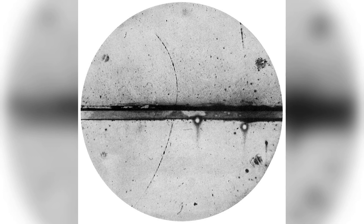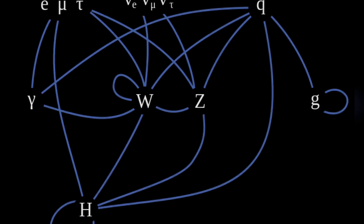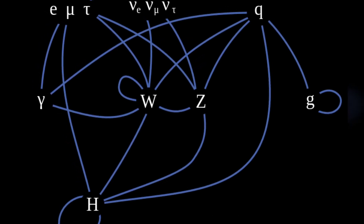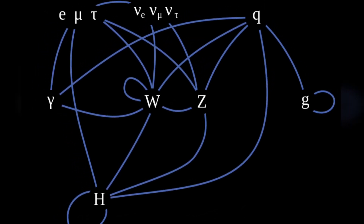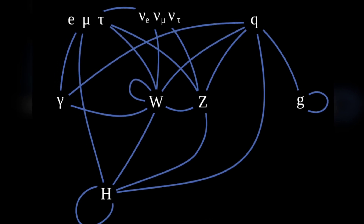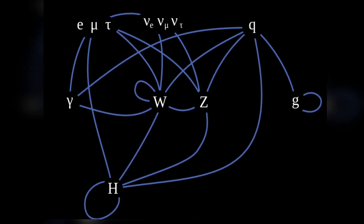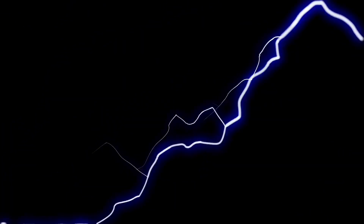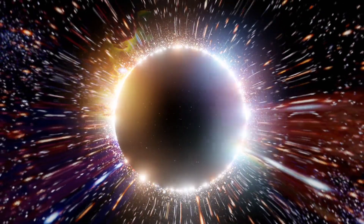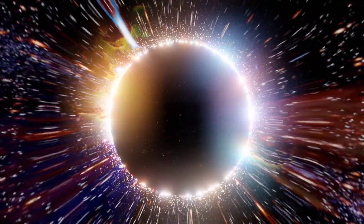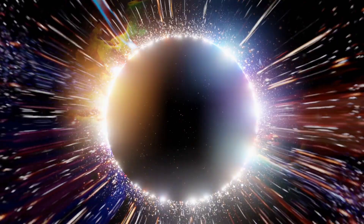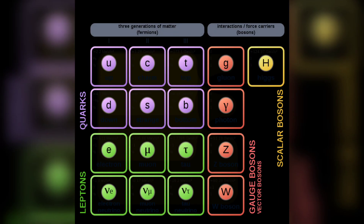Similarly, the boson group has four types called gauge bosons. They are: photon, W and Z bosons, gluon, and graviton. They carry the electromagnetic, weak, strong, and gravitational forces respectively. However, graviton has not yet been detected. Bosons also have one scalar member, called the Higgs boson.